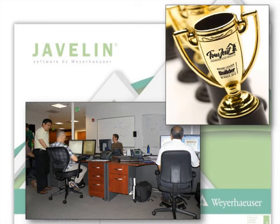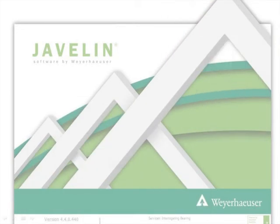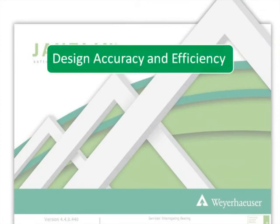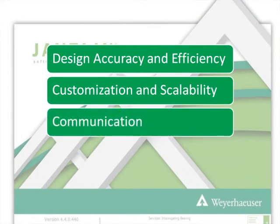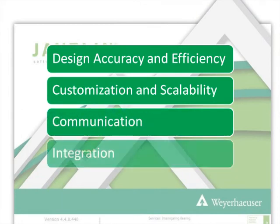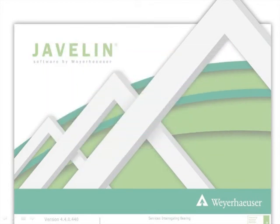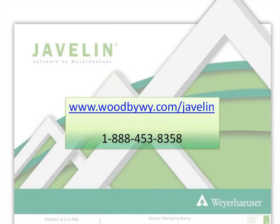Our expertise allows us to offer you software that we stand behind — software that you can trust. Javelin Software by Weyerhaeuser is the state-of-the-art VIM solution that will provide you with design accuracy and efficiency, customization and scalability, clear and complete communication, and seamless integration. Visit www.WoodByeWhy.com/Javelin for more information, or call 1-888-453-8358 to speak with a representative near you.